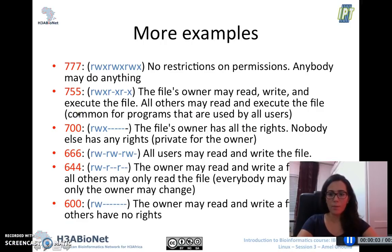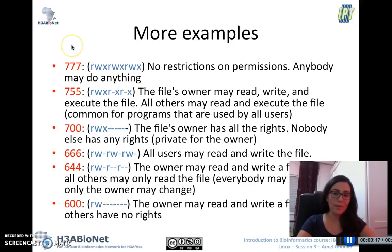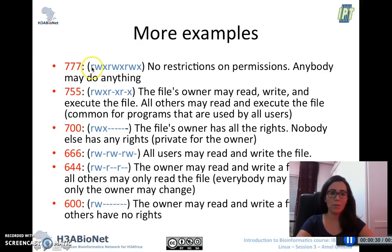Here are some more examples using the octal digits for the different permissions. The example of 7-7-7 is the most permissive option. It basically gives all the rights to the different users — starting from the owner, the group to which the owner belongs, and all the other users. So there are no restrictions; anyone has the right to read, write, and execute.